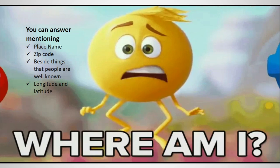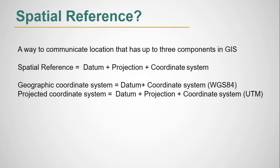A spatial reference is a way to communicate location that has up to three components. In GIS, a spatial reference equals datum plus projection plus coordinate system. We have to have these three components to define a spatial reference.